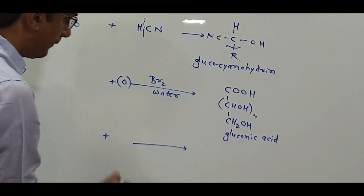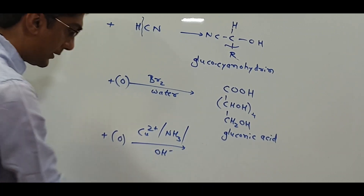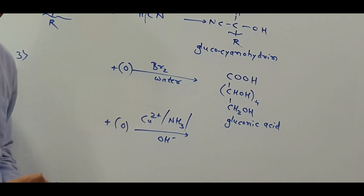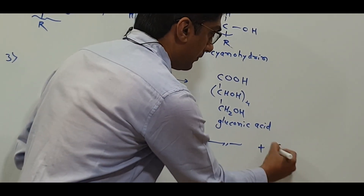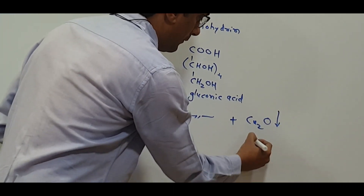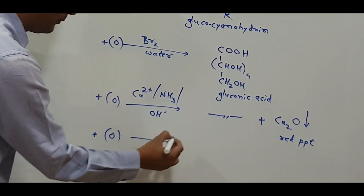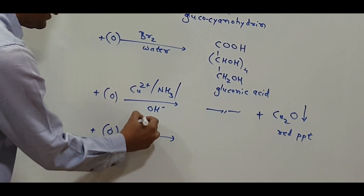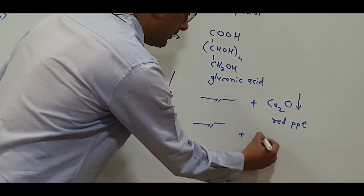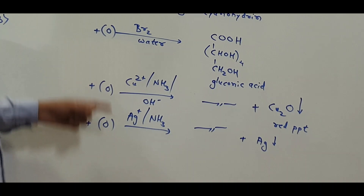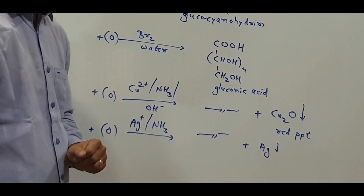A similar reaction occurs with Fehling's solution. Fehling's solution is Cu2+ in the presence of ammonia and OH- ions. If we react glucose with Fehling's solution, the same product is formed along with Cu2O, which gives a red precipitate. Another reaction is with Tollens' reagent, which is Ag+ ions in the presence of ammonia. This forms the same product plus a precipitate of silver — that is the silver mirror test. These are mild oxidizing agents, so they only oxidize the aldehyde group to an acid group, leaving the alcohol groups unaffected.